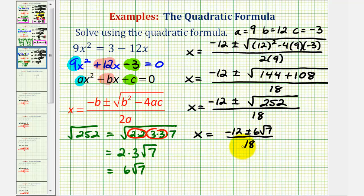There's a couple ways of simplifying this, and we'll show both, but for the first method, we're going to break this up into two separate fractions, since we're dividing by a monomial. This is the same as negative 12 over 18 plus or minus 6 square root 7 over 18. In this form, we'll simplify each fraction separately.